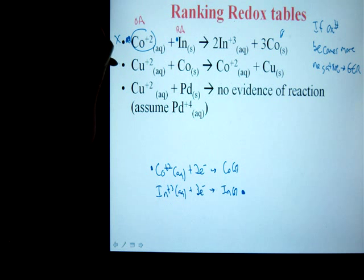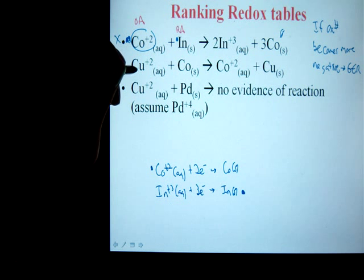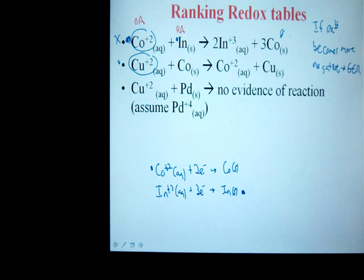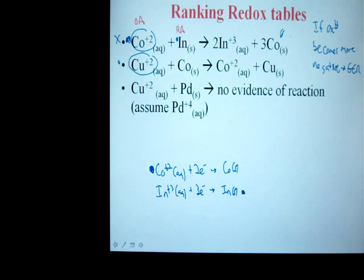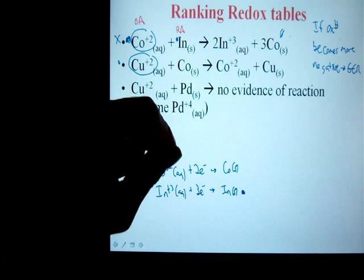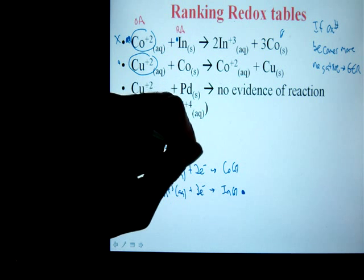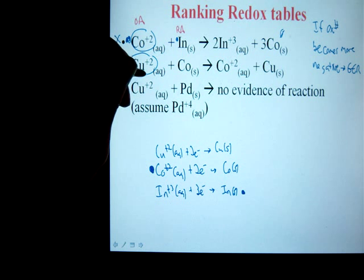Reaction two, we've got a copper ion oxidizing agent reacting with cobalt reducing agent to get a reaction. Evidence was produced, therefore I know I'm dealing with a spontaneous reaction. So now I can again say the OA, copper two, must be above cobalt. Well, I already have cobalt right here. I have that cobalt half reaction, which means now I can put the copper half reaction above it. Write it in. Then we're just going to see if it makes sense.